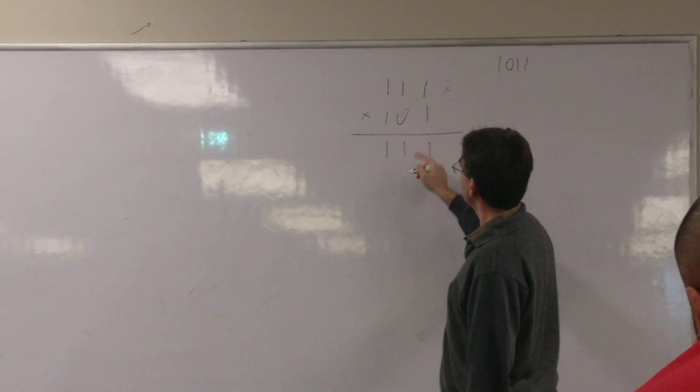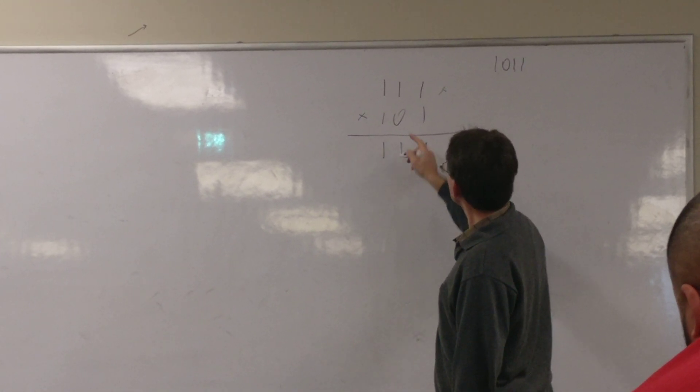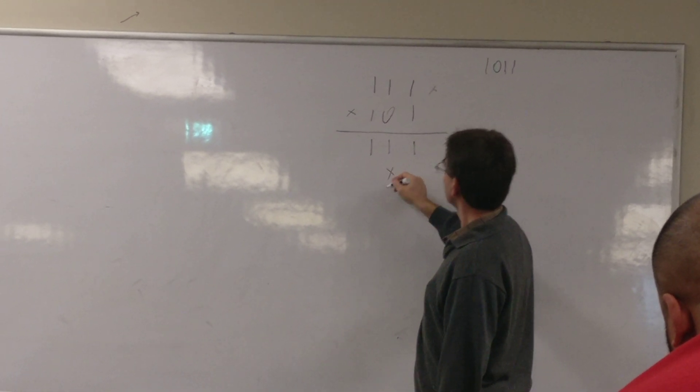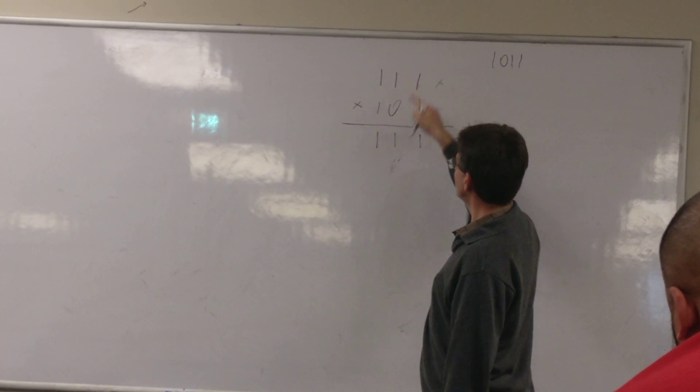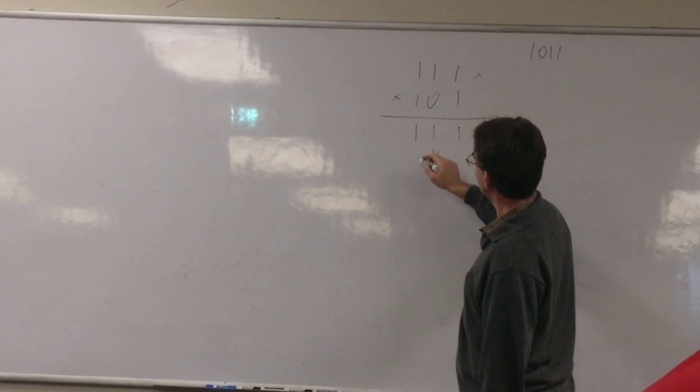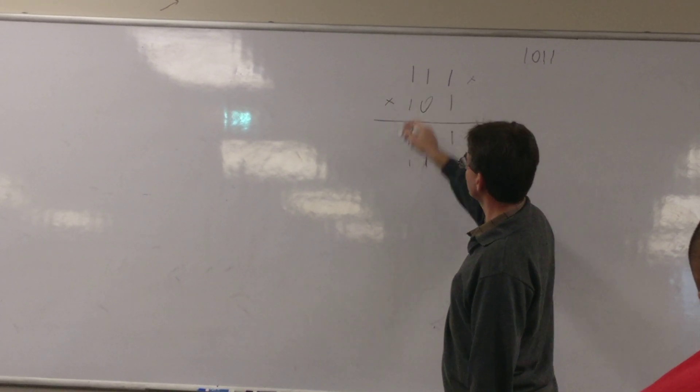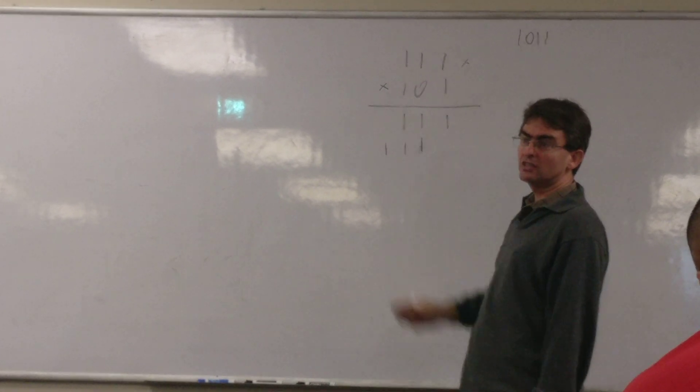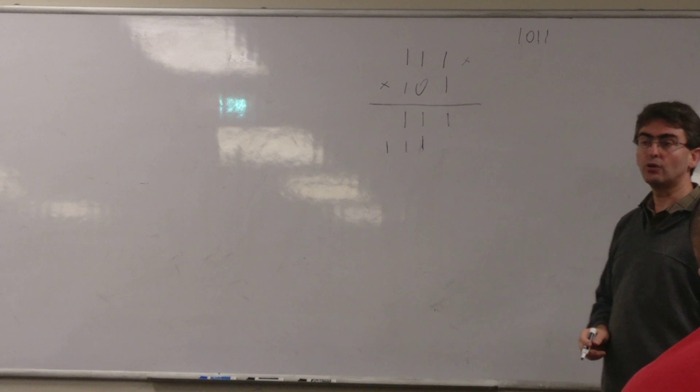If we would have had here 1, we would have obtained 1 times x squared plus x plus 1. 1 times 1, x times 1 is x, x times x is x squared, x times x squared is x cubed. So basically it's shifted as in the good old multiplication.